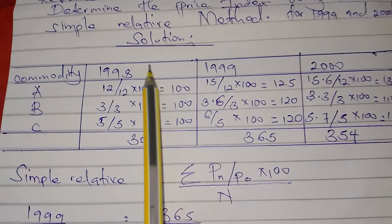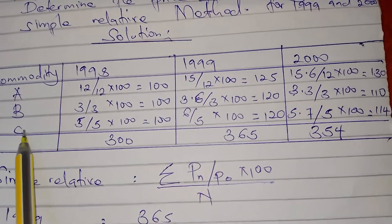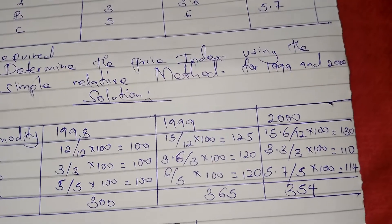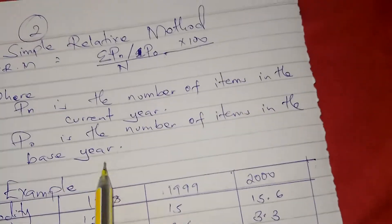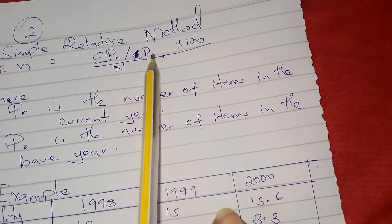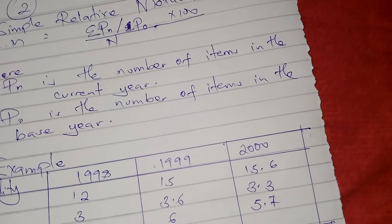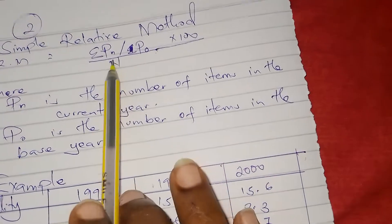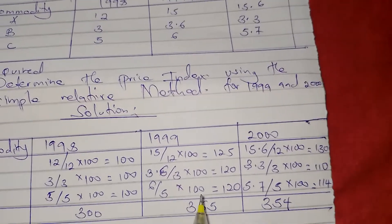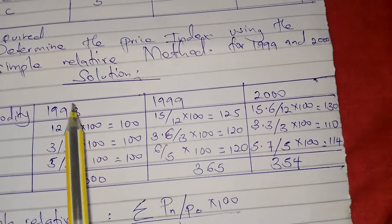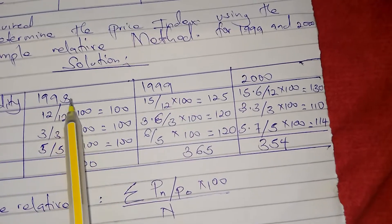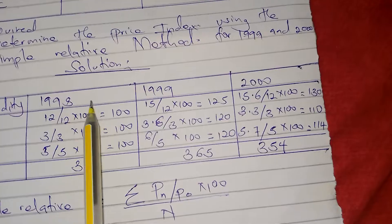For the solution, we first draw a table with commodities A, B, and C. The formula is summation of (Pn / P0) times 100, divided by n. We need to calculate Pn / P0 times 100 for each commodity. For the base year 1998, since there is no earlier year, it serves as both the base year and the current year simultaneously.